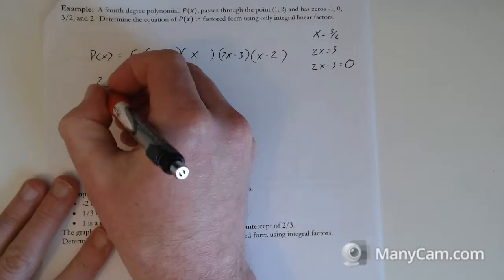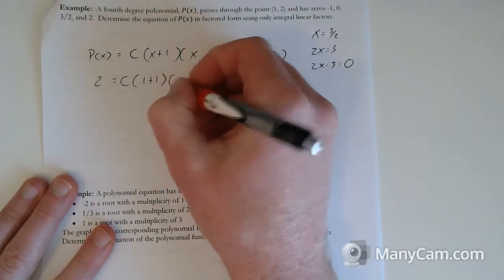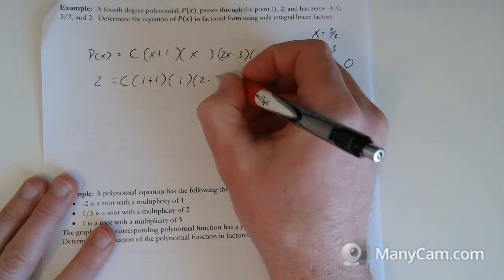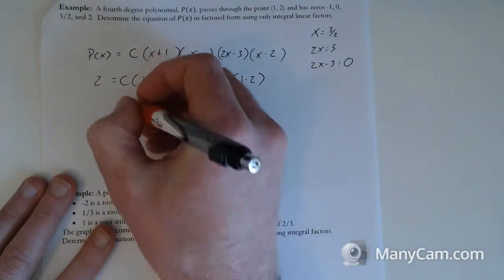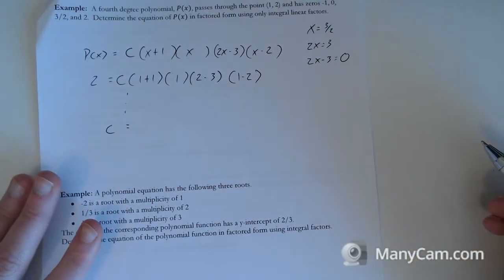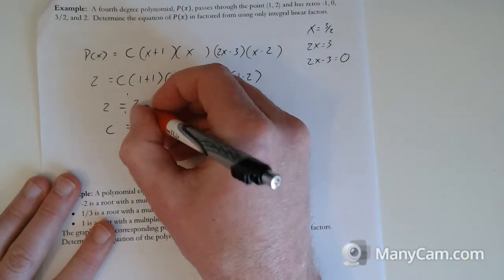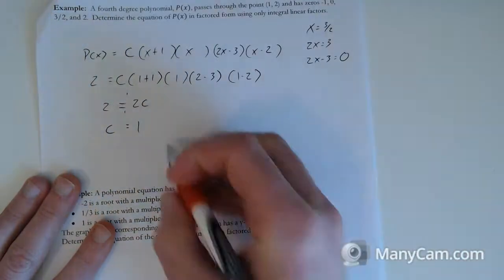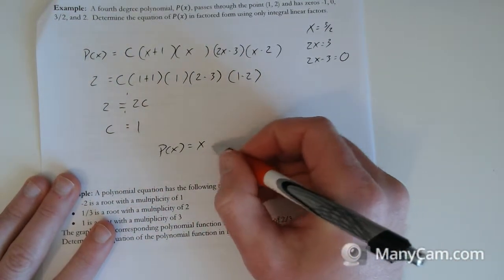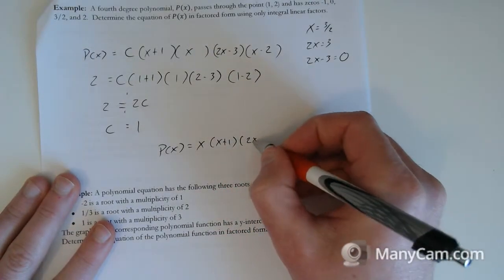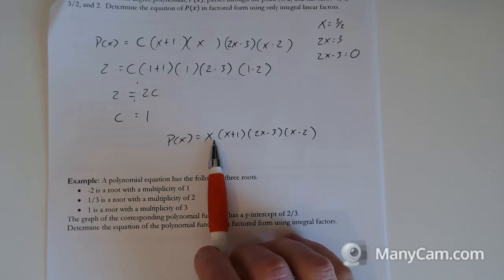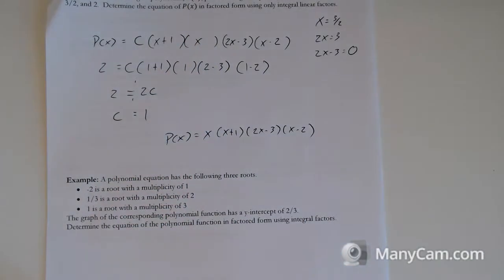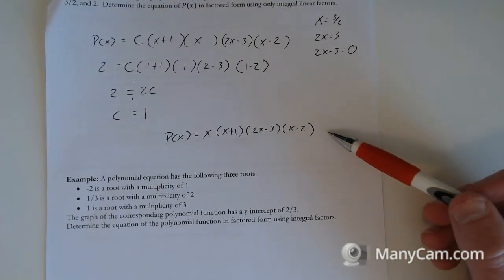Looks something like that. We don't need brackets around the x. We'll tidy that up at the end. Now let's sub in our point. So 2 is equal to c times 1 plus 1 times 1 times 2 minus 3 times 1 minus 2. Solve! We should end up with 2 is equal to 2c. And so c is equal to 1. So our polynomial function is just x times x plus 1 times 2x minus 3 times x minus 2. We'd like to put our coefficients at the front. If there's a single x term, we actually usually put it at the front. I wouldn't say it's explicitly wrong to have it in the middle, but it is better to have it at the front, just for tidiness sake. And our c value is 1.